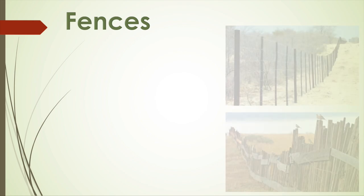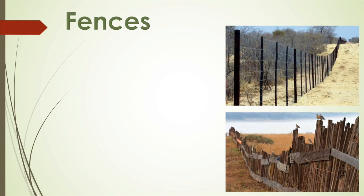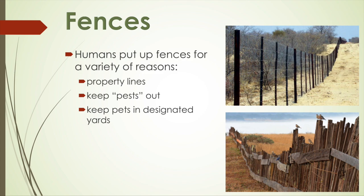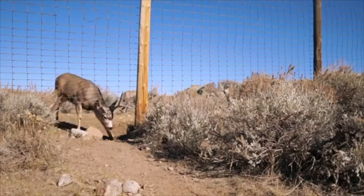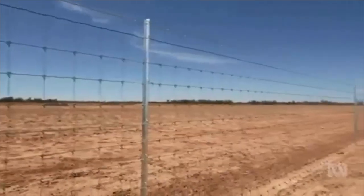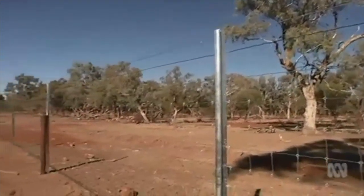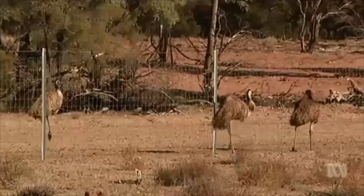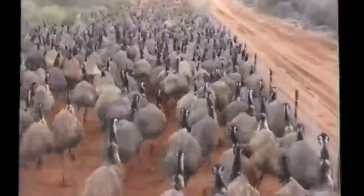Our last source of fragmentation that we are going to discuss today are fences. If you're walking through your neighborhood or drive past a farm, you will probably find fences everywhere. Have you ever thought about how your backyard fence might impact the animals living in your area? Humans put up fences for a variety of reasons such as property lines, keeping pests out, keeping pets inside designated yards, and sports fields. We may not think about it, but fences obstruct animals from passing through to the other side of their habitat. In Australia, farmers have installed dingo fences to prevent the wild dog from eating their flocks of sheep. This strategy however creates a division through the middle of the habitat, which is home to many more species beyond the dingo. Fences along roads have also caused huge populations of emus to reroute and find alternative ways to get back to the other side of their habitat.